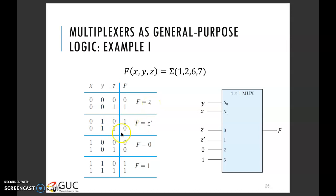And it's quite clear that whatever values z takes on, it's basically the inverse of it for the output f. So you write down f is equal to z dash.